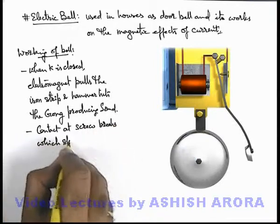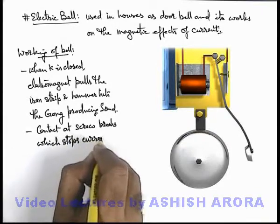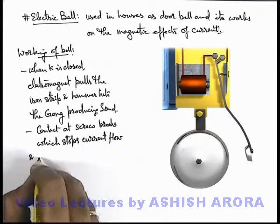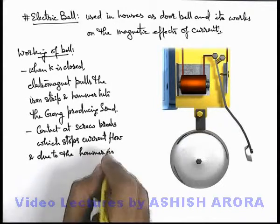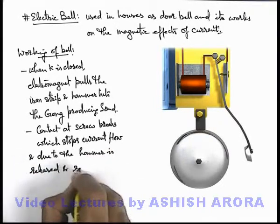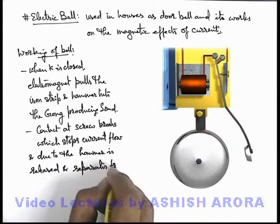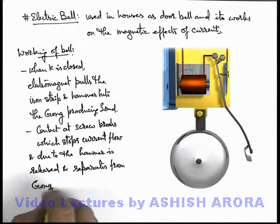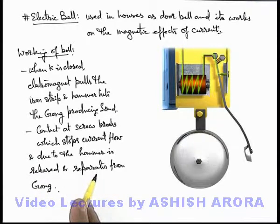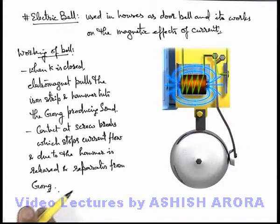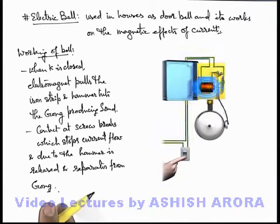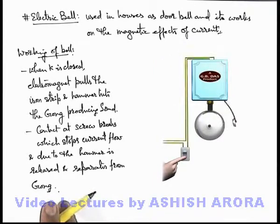The breaking of contact stops the current flow, and due to this the hammer is released and separates from the gong. Now, as soon as the hammer separates, again the contact is made at the other point with the interruptor screw. The electromagnet again pulls the hammer and it hits the gong, and the process is repeated, producing a continuous sound due to the hammering action of the hammer on the gong.